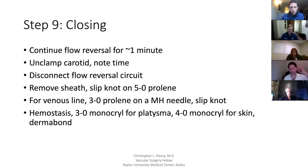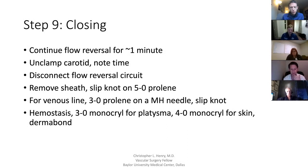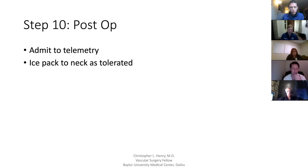For the venous line, use a 3-0 Prolene on an MH needle to get a really big, deep bite, do a U-stitch with the same slipknot concept to get hemostasis there. Make sure there's no more bleeding, then close with 3-0 Monocryl deep, 4-0 Monocryl subcuticular, and dermal bond. We admit our patients to telemetry and always put an ice pack on their neck.